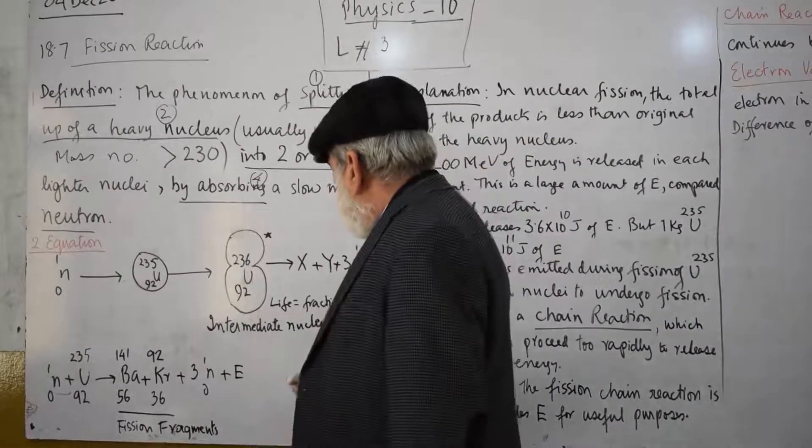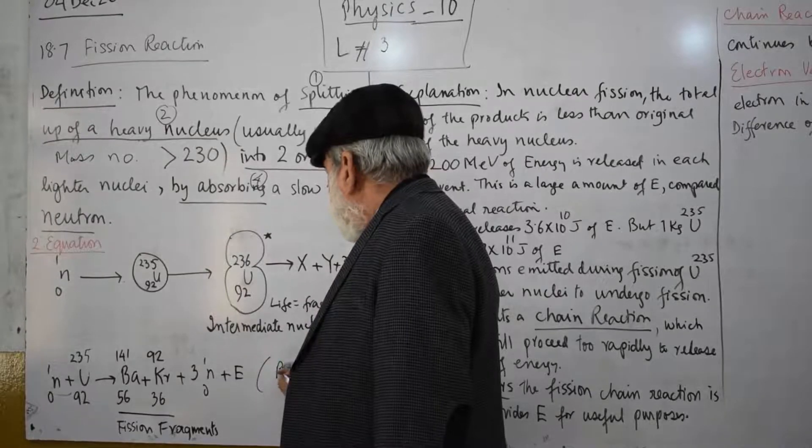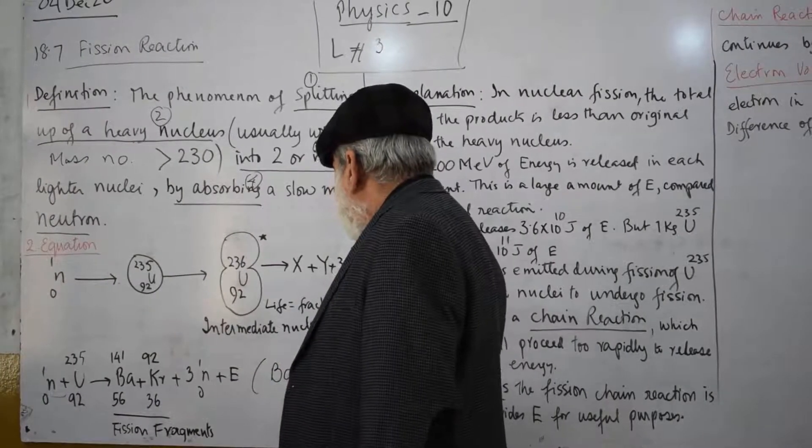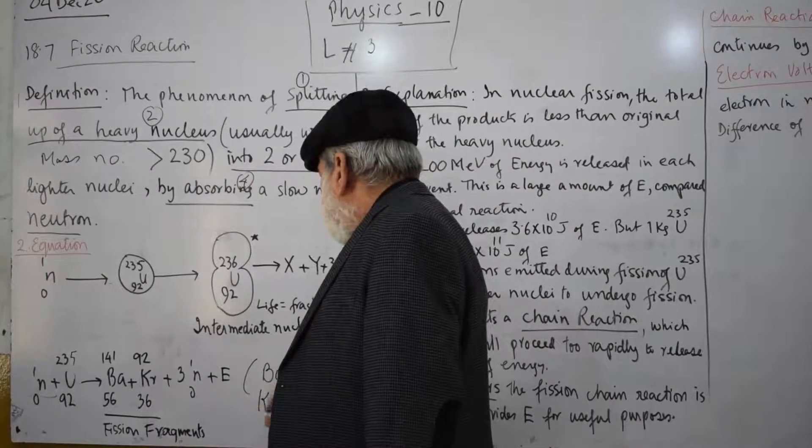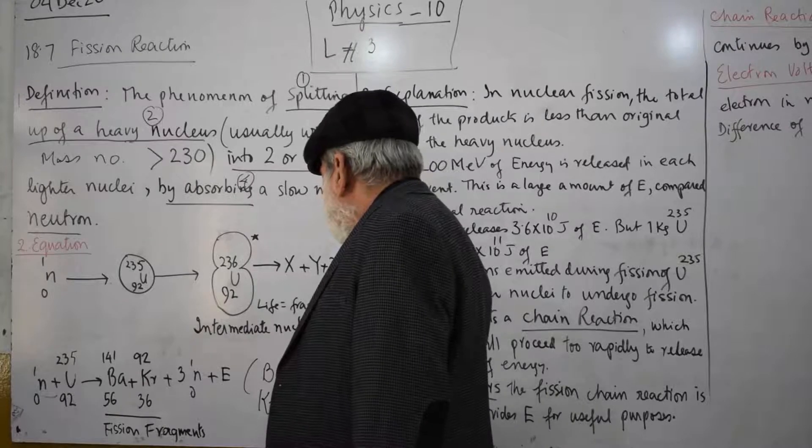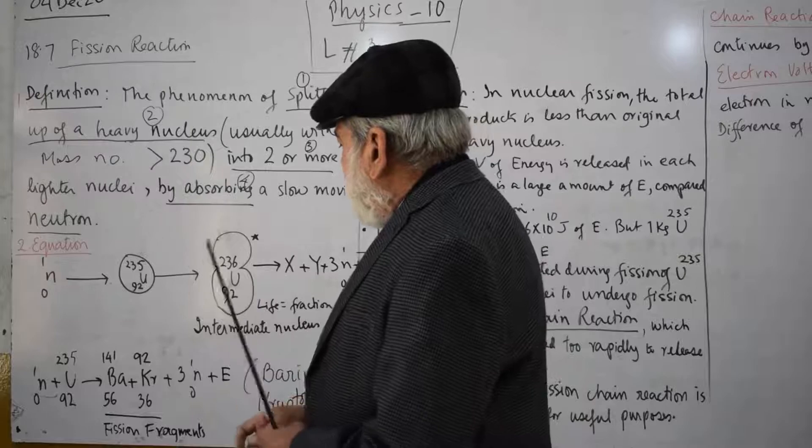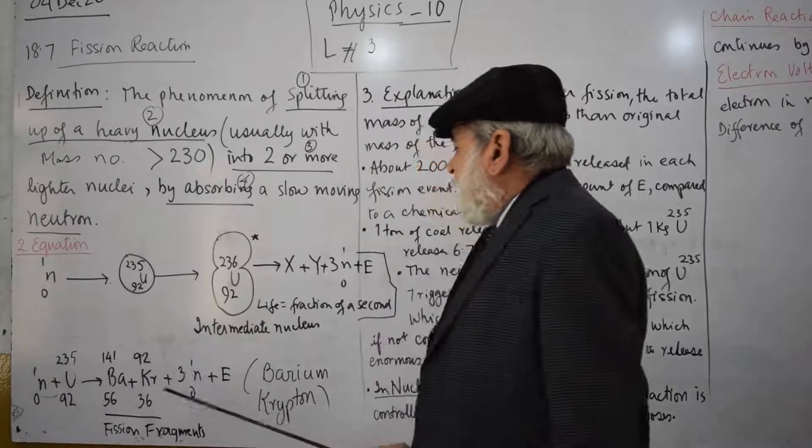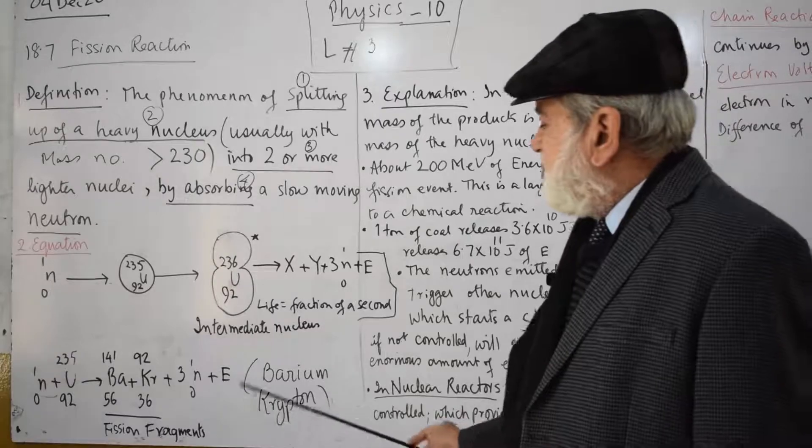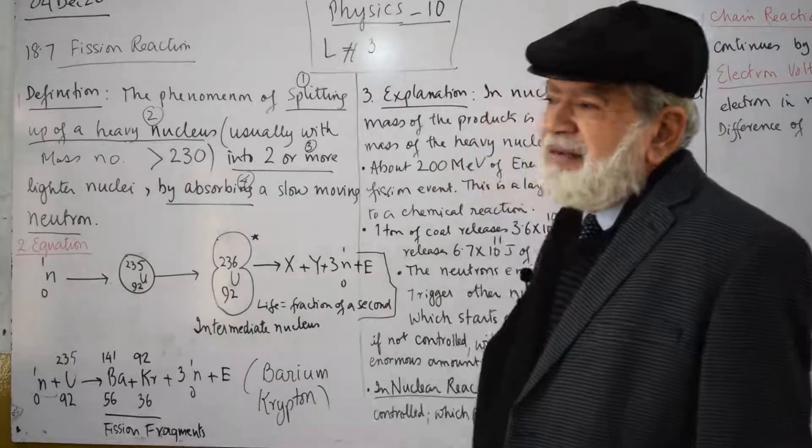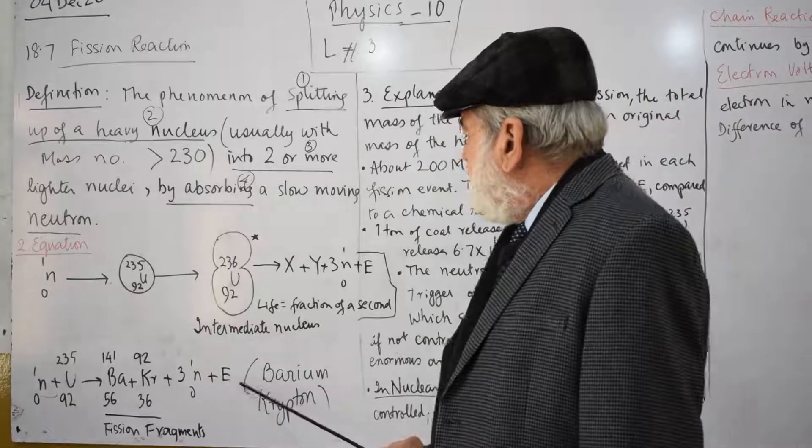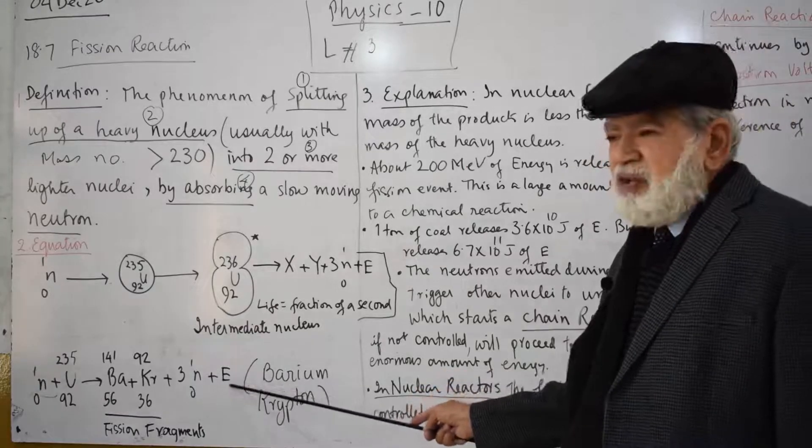Barium-141 and Krypton-92 plus three neutrons plus energy. For each atom that undergoes fission, about 200 million electron volts of energy is released.